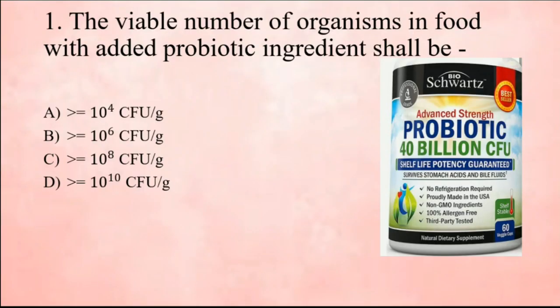Question number one: the viable number of microorganisms in food with added probiotic ingredients shall be — options are given. In the previous video we discussed what probiotics are — they are the live bacteria that are good for our health, especially for our digestive system. It is suggested that probiotics must contain at least 10 to the power 6 viable colony forming units per gram to survive digestion and exert a positive effect in the body.